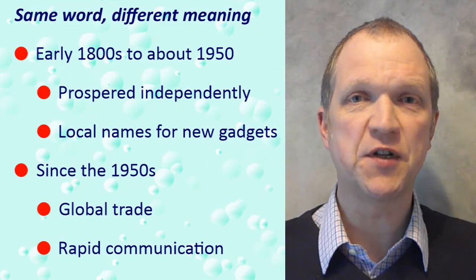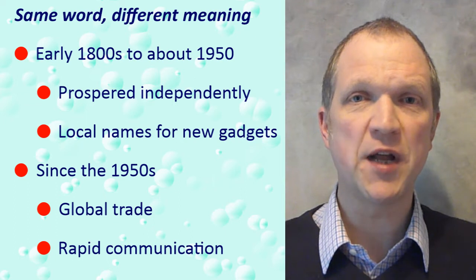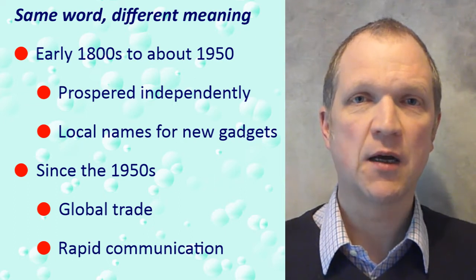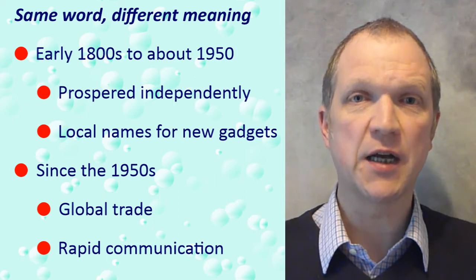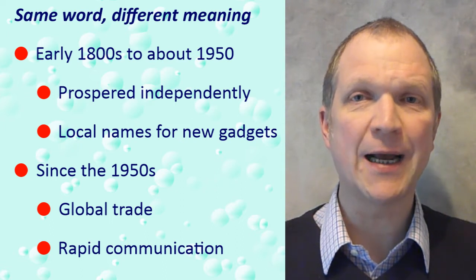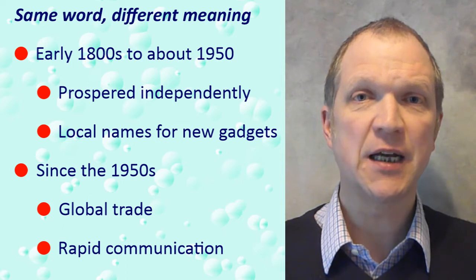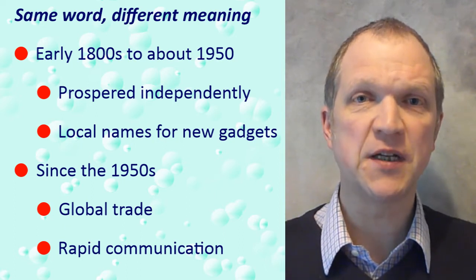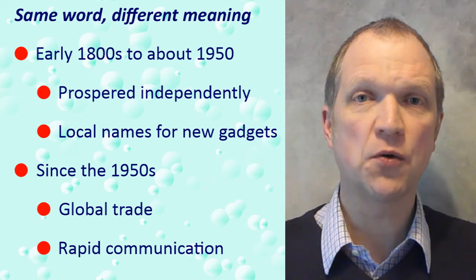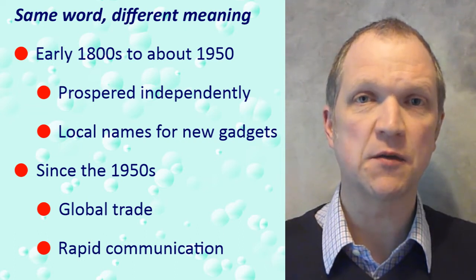As mentioned in my previous video, the same object can have a different word or name to describe it in different English-speaking countries. As a rough guide, something invented between the early 1800s and about 1950 is more likely to have a different word or name for it in different versions of English, while objects and jobs invented since the 1950s usually have the same word or name across the English-speaking world.